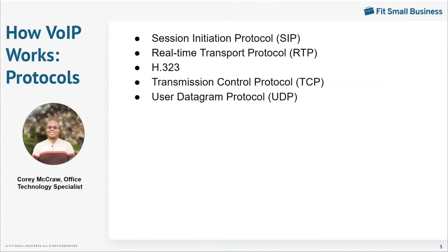The User Datagram Protocol, or UDP, is far more common than TCP because it doesn't require a connection. It doesn't have any overhead for maintaining or terminating one, and there's also no inherent error checking. As a result, UDP is comparatively fast and very efficient.